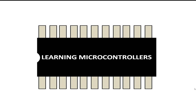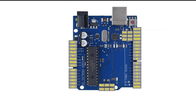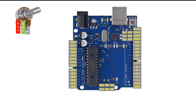Hello guys, welcome to Learning Microcontrollers. In this video I'm going to show you how to use an Arduino Uno to control the brightness of an LED using a potentiometer. This is our Arduino Uno, easily available in the market. This is the potentiometer — it comes in various shapes, sizes, and models, but all have three pins. The left one I label as VCC, the center one as ADC, and the right one as ground. The center is the output pin.